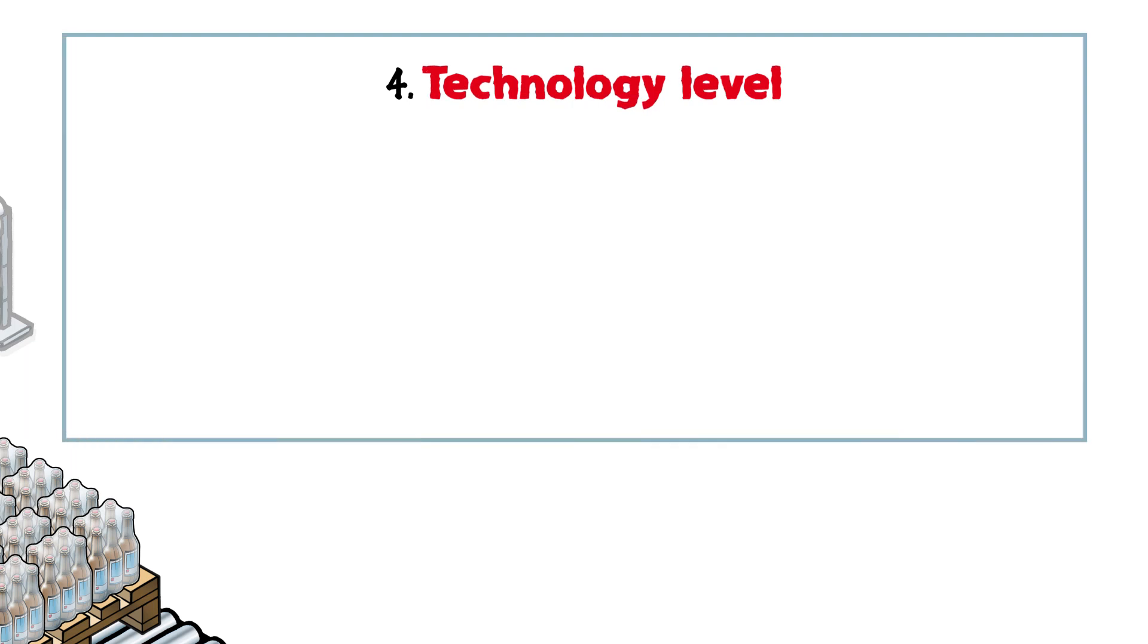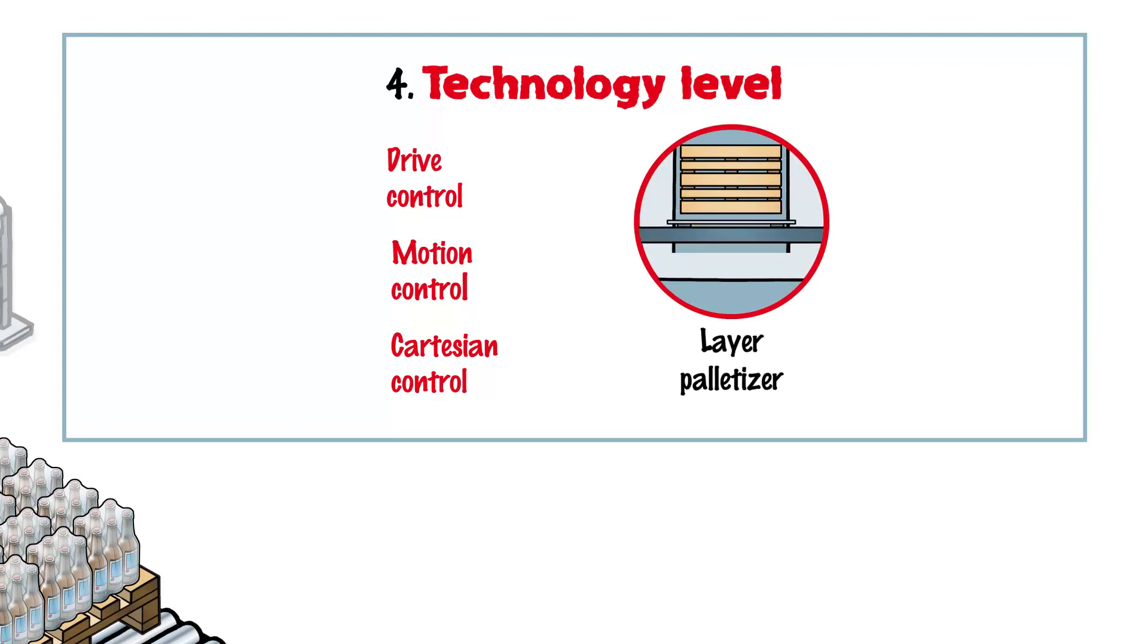In simplified terms, palletizers can basically be categorized into three groups: drive control, motion control, and Cartesian control. Layer palletizers, for instance, prepare the entire layer and then place it on the pallet in a single operation. In most cases, this is a quick and easy solution.